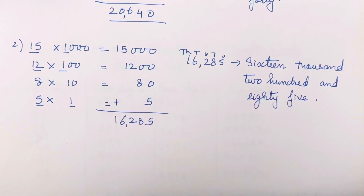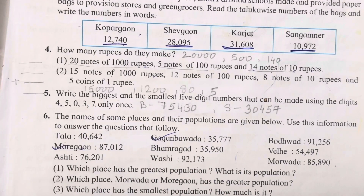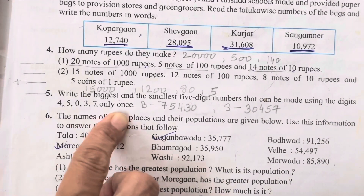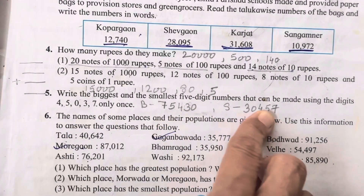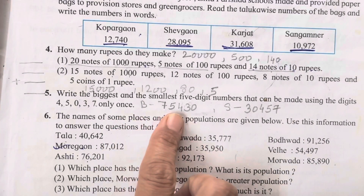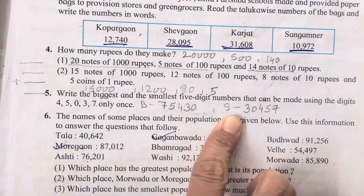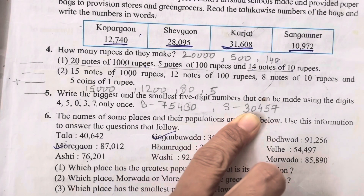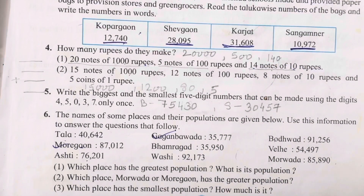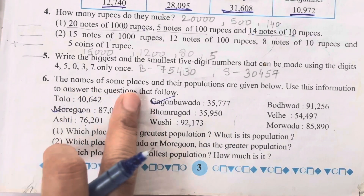Question number five: write the biggest and smallest five-digit number that can be made using each digit only once. The bigger number you can write is 75430. For the smaller number, zero goes in the second place, making it a smaller number. So it's very easy - let's move on to the sixth question.